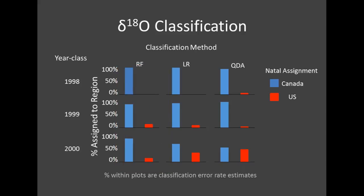On the whole, the three methods agree fairly well, especially within a given year class. The 2000 year class appears to have a significantly higher US classification than the other year classes, but overall these US-captured adults appear to be originating from the Canadian contingent, at least by their stable isotope values.